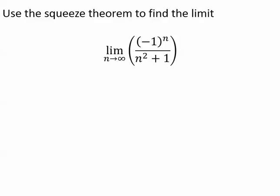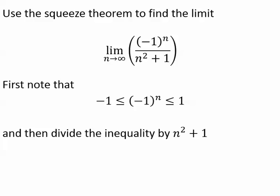Another thing we learned in functions is how to use the squeeze theorem, and we're going to use it to find the limit of this sequence. We note that the numerator, negative 1 to the n, is always between negative 1 and 1 — in fact it's either equal to negative 1 or positive 1. Since we're using the squeeze theorem, we write it as an inequality: negative 1 to the n is between negative 1 and positive 1. Then we look at the denominator of the quotient and divide the inequality by n squared plus 1, and it looks like this.